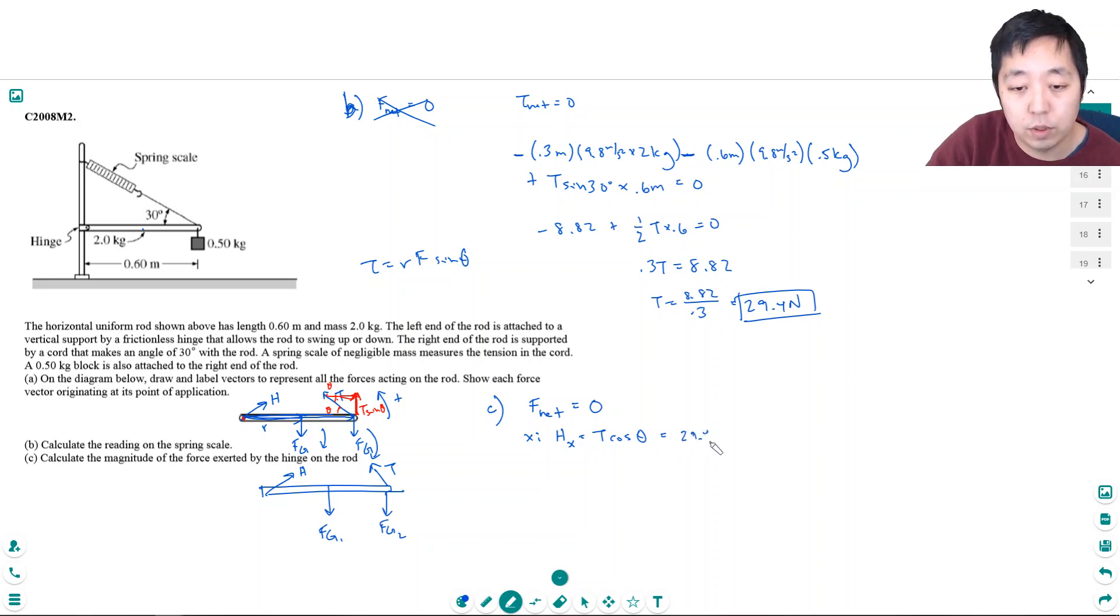So the hinge in the x direction is t cosine theta. That's 29.4 cosine 30 degrees. So that's 29.4 times root 3 over 2. And that's 25.46 newtons.